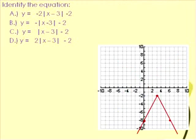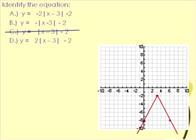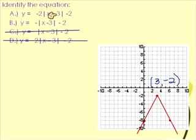You're going to be given a multiple choice question on the exam. You're given a graph and some equations. One thing that will help you eliminate choices right away is to notice that this graph is opening upside down, which immediately eliminates B and D as possibilities because the a values there are not negative. So I can look first to see what the vertex point is — it is at (3, negative 2).